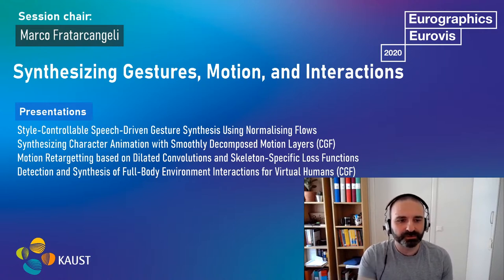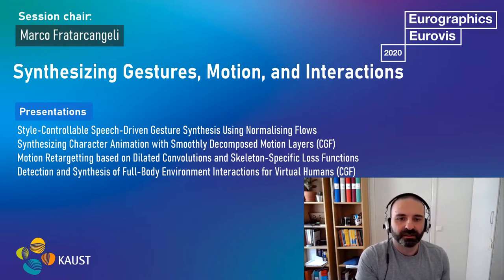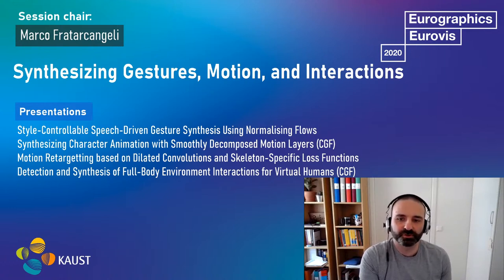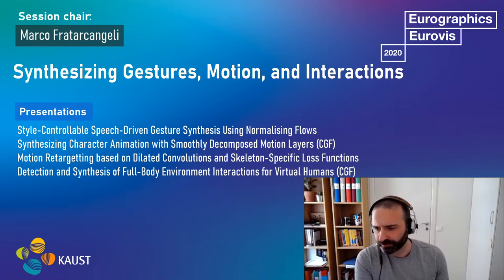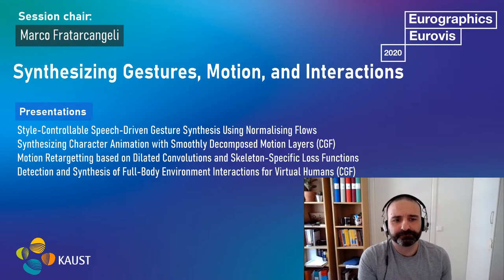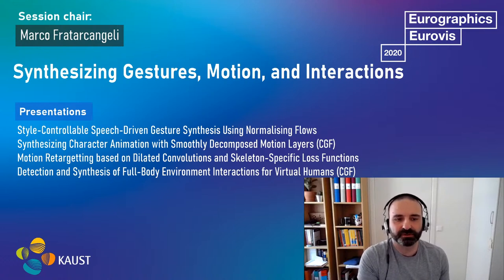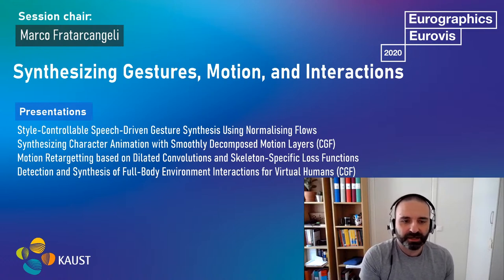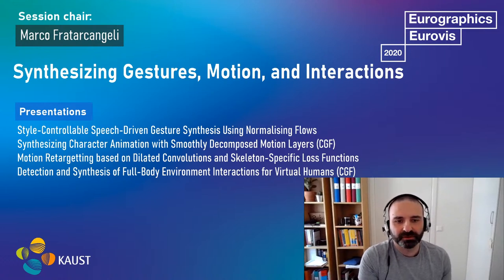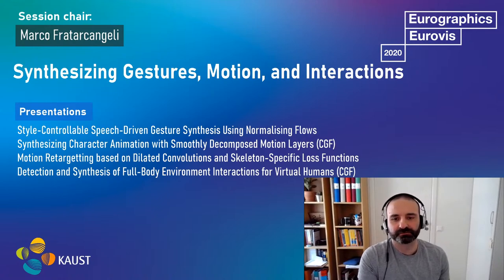The third paper is about motion retargeting, which is useful for transferring animation between two different humanoid characters despite differences in skeleton size. The title is Motion Retargeting based on Dilated Convolutions and Skeleton-Specific Loss Functions. The authors are Sangbin Kim, Inbun Park, Seum Suk Won, and Joong Yun Han.